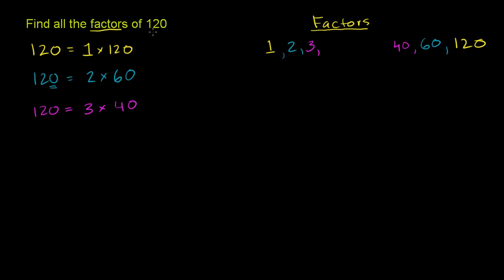Let's see if 4 is divisible into 120. The divisibility rule for 4 is you ignore everything beyond the tens place and just look at the last two digits. The last two digits are 20, and 20 is definitely divisible by 4, so 120 will be divisible by 4. To figure out what to multiply 4 by: 12 divided by 4 is 3, so 120 divided by 4 is 30. So we have two more factors, 4 and 30.